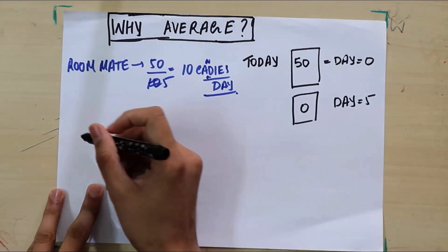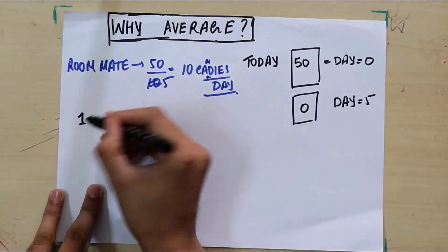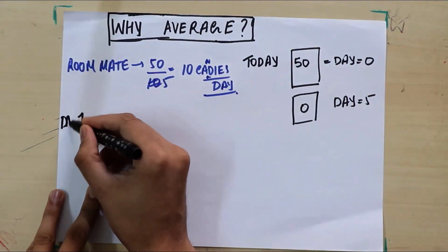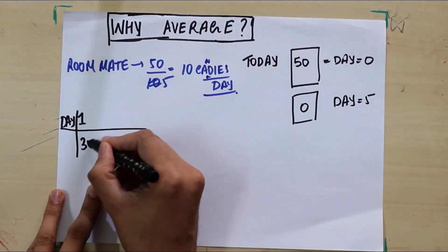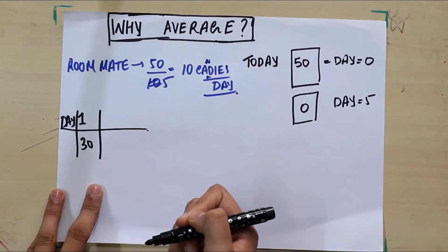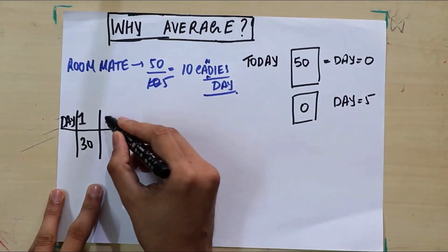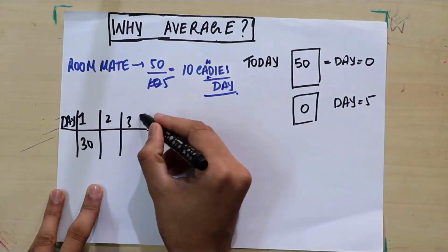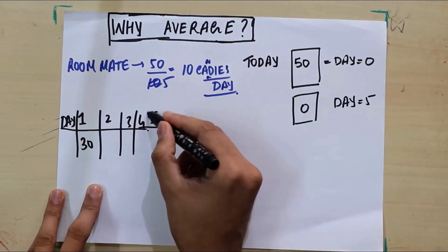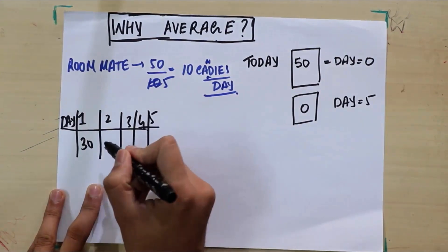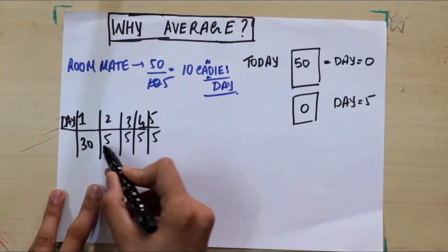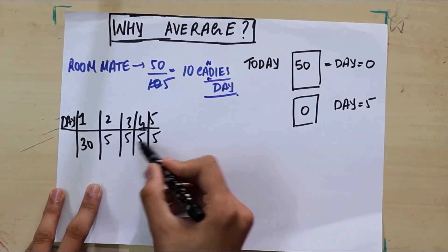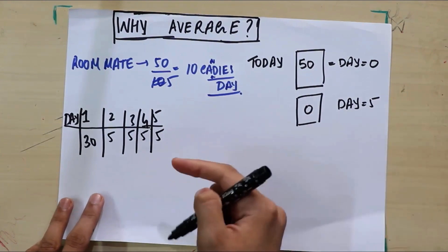This is what he did. On the first day, so I'm just going to write the days here, on the first day he ate 30 candies. Whoa, okay. Then he got a stomach ache and something like that. And then the next four days, I'm gonna just note it down over here, the next four days he ate five candies each. That sums up to 50, right? 10, 20, 30, 50. And that's how he ate, in total, five days, 50 candies. That's what actually happened.